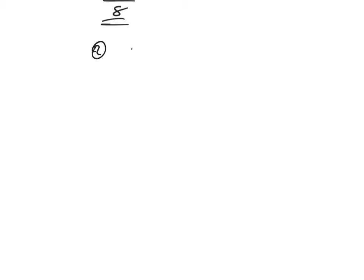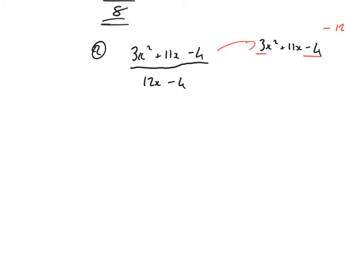Let's try Example 2: 3x squared plus 11x minus 4 over 12x minus 4. Let's first deal with the trinomial on top: 3x squared plus 11x minus 4. 3 times minus 4 is minus 12. The product is negative, therefore the signs are going to be different. Combinations for 12: 1 and 12, 2 and 6, 3 and 4. Which pair can organise together to give plus 11?